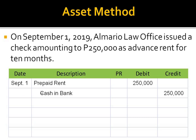Now, from this entry, we have a guide to prepare the adjusting entry on December 31. Since the company debited prepaid rent here, in our adjusting entry, we have to credit that account. And then, debit its opposite account title. Since in deferral of expense there are two methods — asset method and expense method — it should be clear that the opposite of asset is expense. Therefore, since we credited the asset prepaid rent here, we must debit its opposite expense account, rent expense.